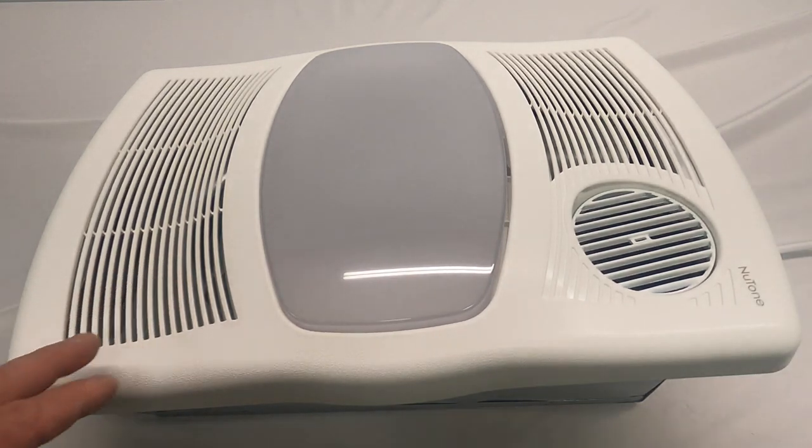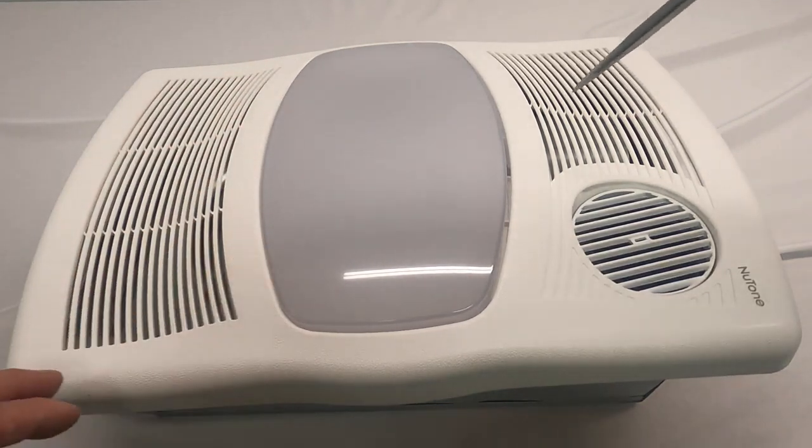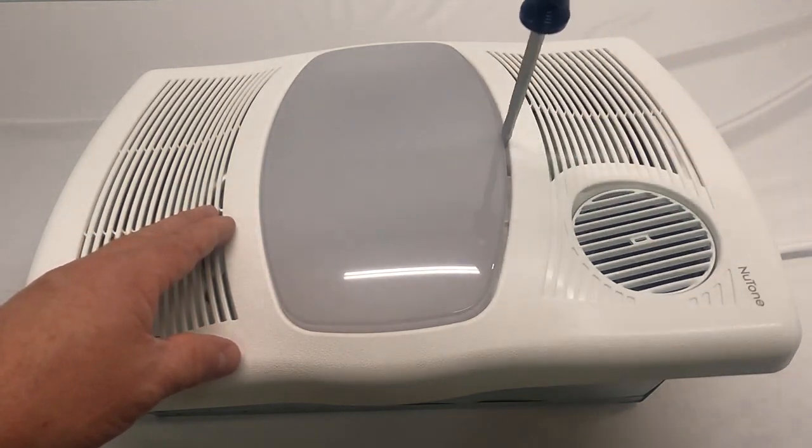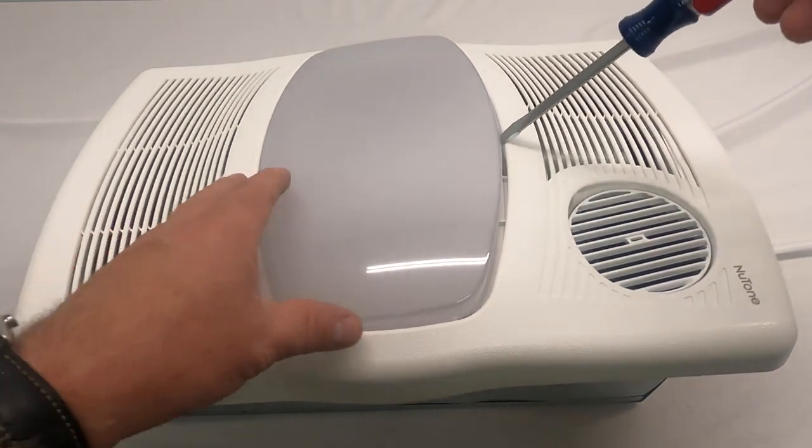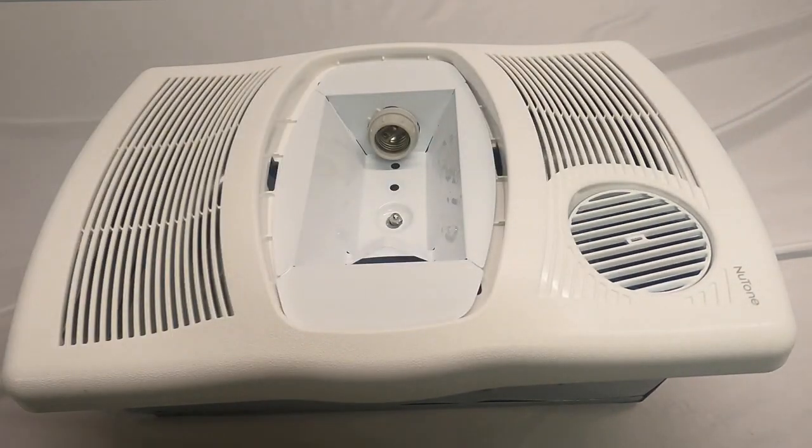First thing I want to show you is how to take this light lens off of this unit. What you can do is take a regular screwdriver and just put that screwdriver between the lens and the grill and just pry down on it. That lens will pop right off of there.